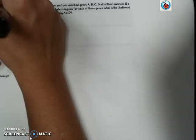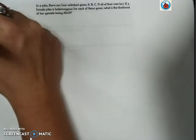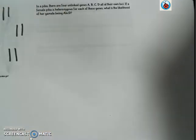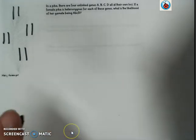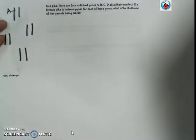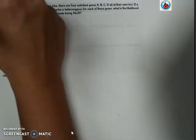So here's another question about PICA and producing gametes. It says in PICA there are four unlinked genes. So now we are looking at four separate sets of chromosomes that carry these alleles or these gametes. And it says they are heterozygous for each of these.